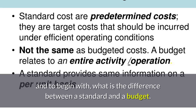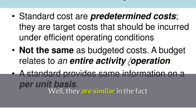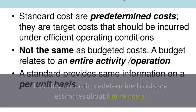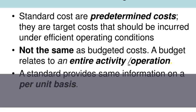To begin with, what is the difference between a standard and a budget? Well, they're similar in the fact that they are both predetermined costs — they're estimates about future costs. However, the difference is that the budget is a total amount whereas the standard is a unit amount.